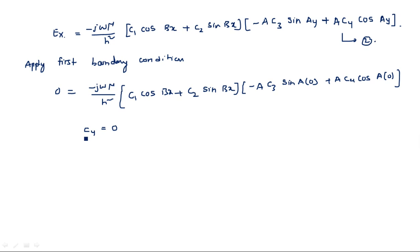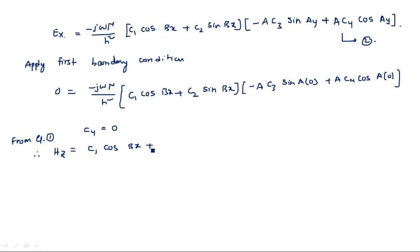From the first boundary condition we conclude that c4 is equal to zero. Substituting this back into equation 1, the updated hz equation becomes: hz equals [c1 cos(bx) plus c2 sin(bx)] times c3 cos(ay). This is equation number 3.